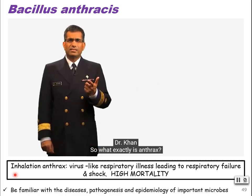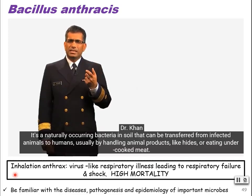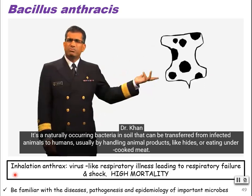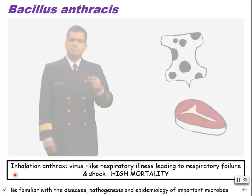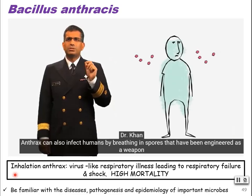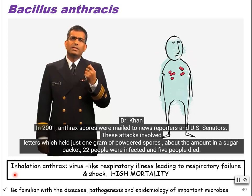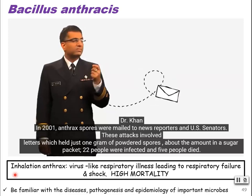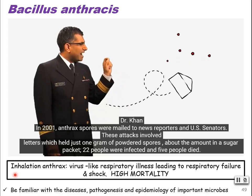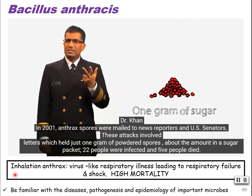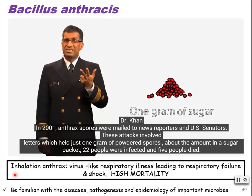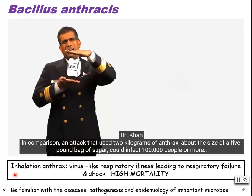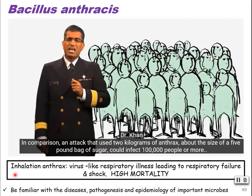Anthrax is a naturally occurring bacteria in soil that can be transferred from infected animals to humans, usually by handling animal products like hides or eating undercooked meat. In 2001, anthrax spores were mailed to news reporters and U.S. senators. These attacks involved letters which held only one gram of powdered spores — about the amount in a sugar packet — and still 22 people were infected and five people died. In comparison, an attack that used two kilograms of anthrax, about the size of a five-pound bag of sugar, could infect a hundred thousand people or more.